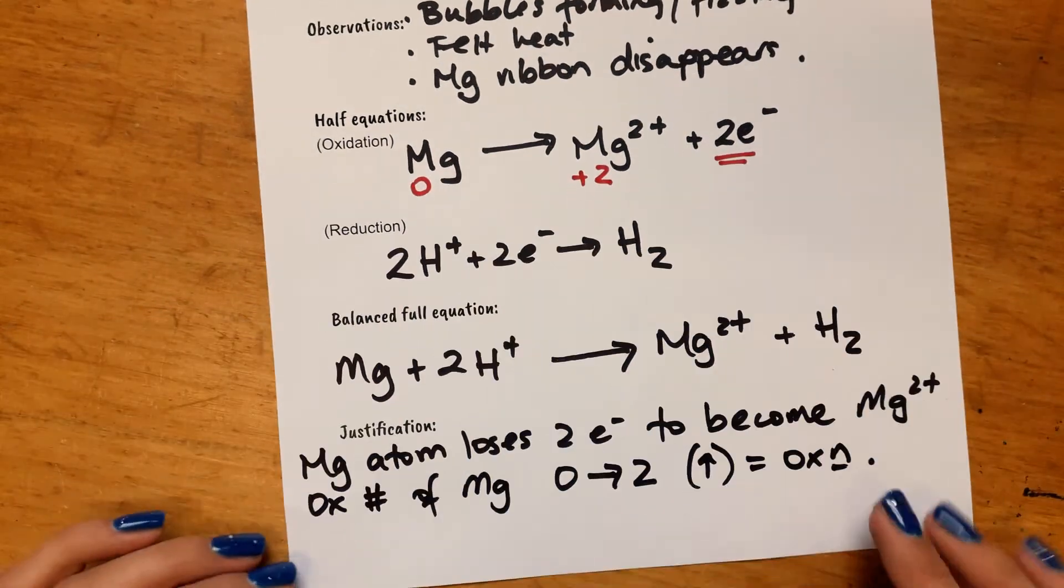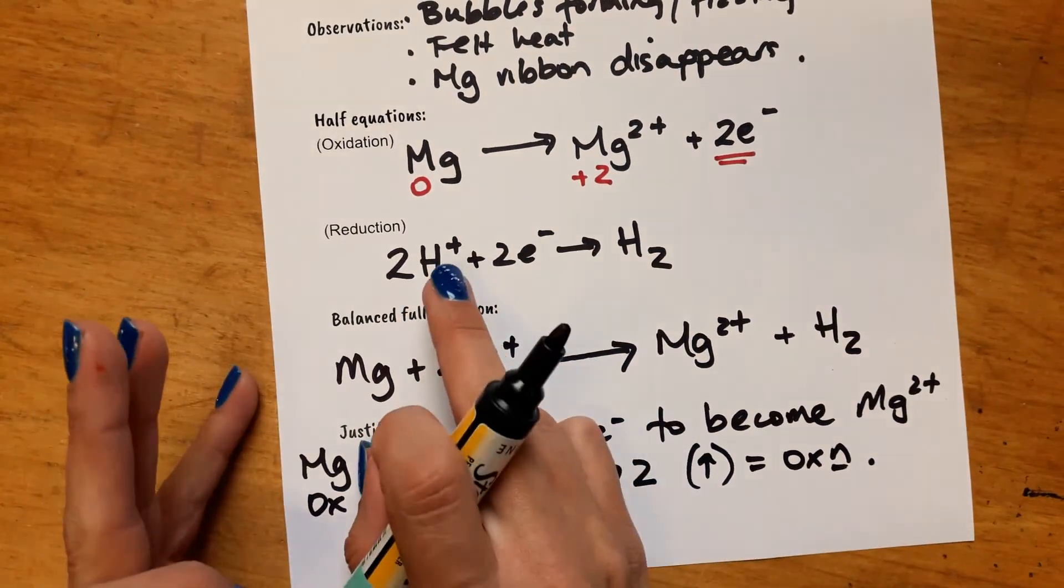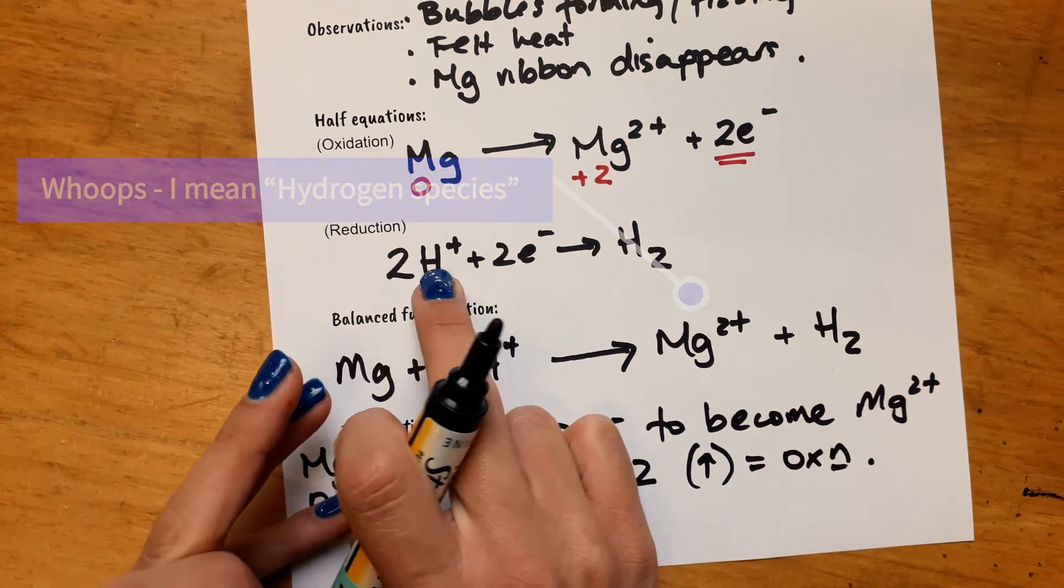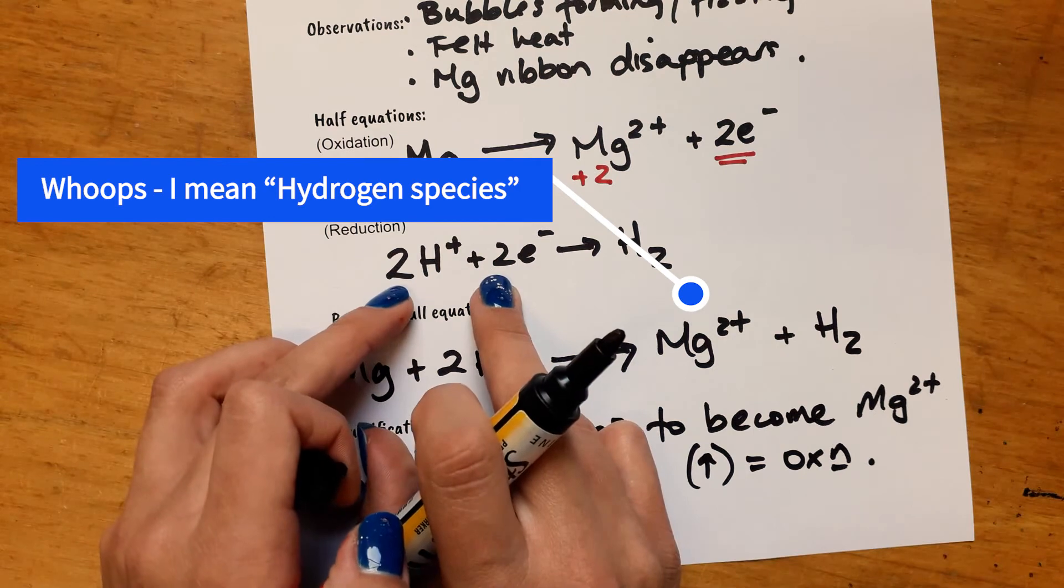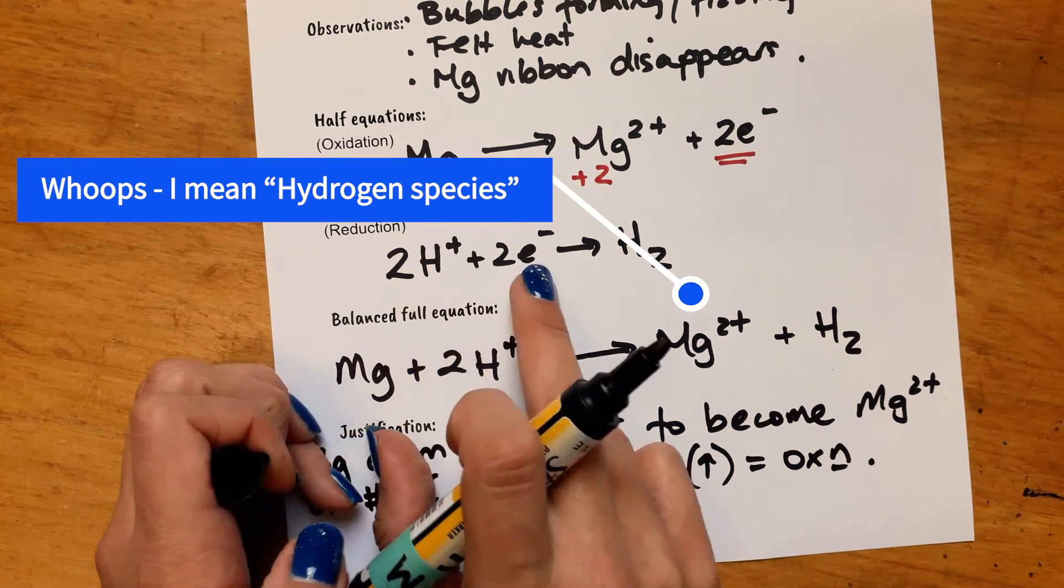And the same thing for reduction. You can say here that each hydrogen atom is going to gain one electron each. It's just that that's happening in a ratio of two to two. So each hydrogen ion gains an electron. And then two of those happen, you get a hydrogen gas molecule forming.